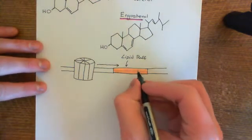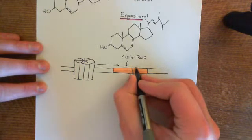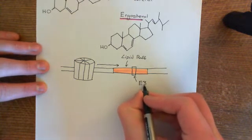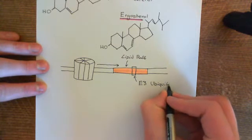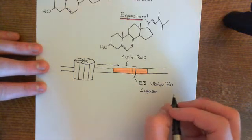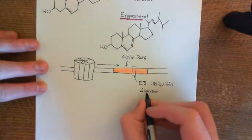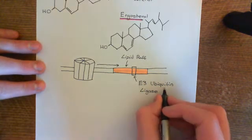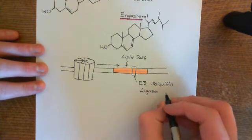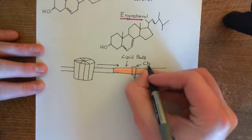Once it gets into the lipid rafts, there is a special enzyme present within lipid rafts. This enzyme is in the class of enzymes known as E3 ubiquitin ligases. There are a huge number of different enzymes considered E3 ubiquitin ligases — you're classified as one because you attach ubiquitin molecules onto proteins. There are many different enzymes which perform this function. The specific ubiquitin ligase present within lipid rafts is known as CBL.